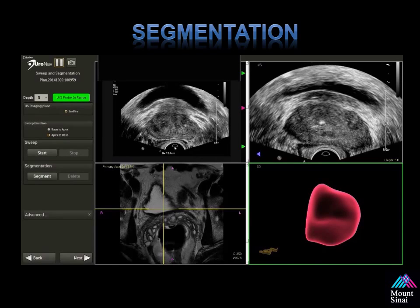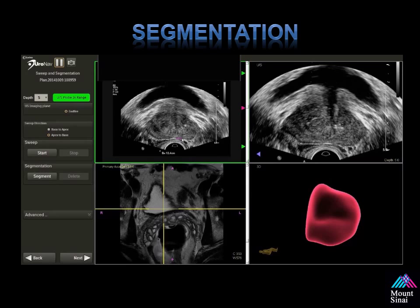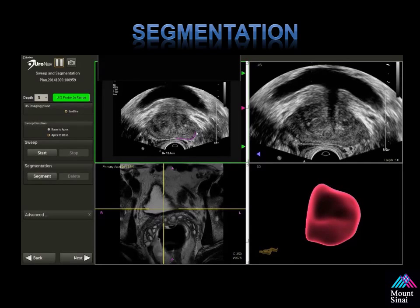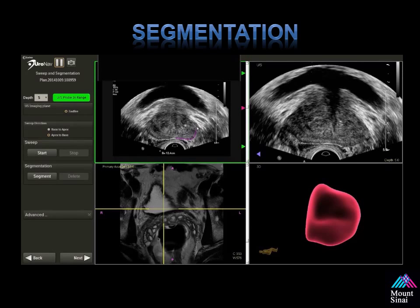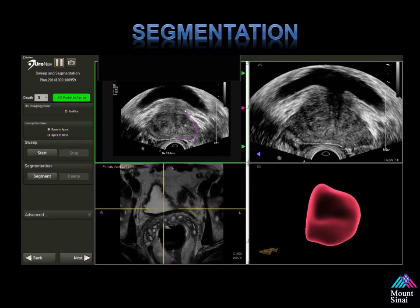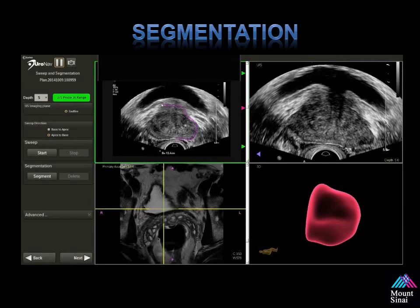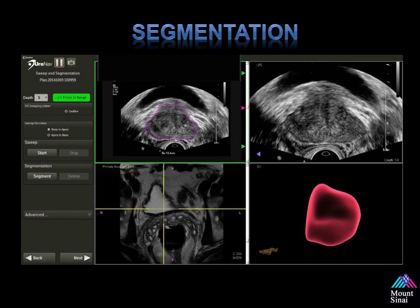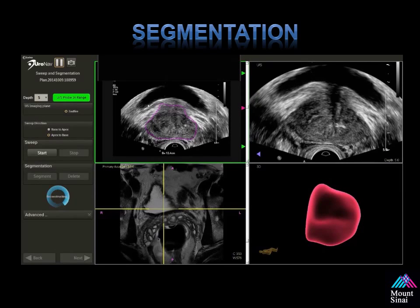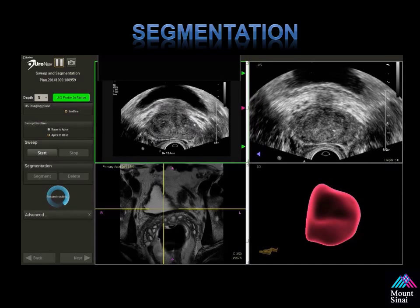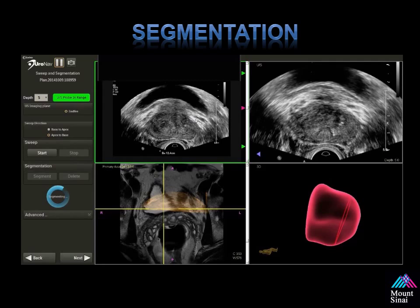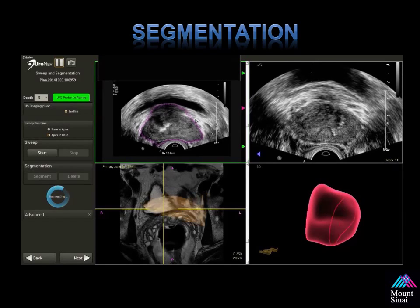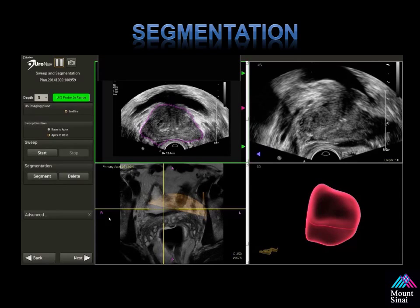Now we'll segment the prostate by outlining one slice. You don't always have to do this, but for teaching purposes I am not skipping any steps to allow you to understand how the technology works. Typically my ultrasound technologist performs this while I'm holding the probe inside the patient. It's always important to make sure your ultrasound depths are set the same on both sides of the screen. We're reconstructing and segmenting the prostate in real time. Once completed, we confirm good ultrasound segmentation — notice how the purple dots outline the entire prostate.